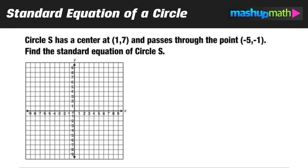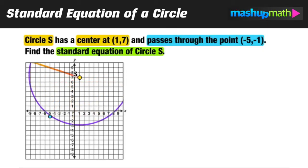So here we have circle S with a center at (1,7), it passes through the point (-5,-1) and we want to find its standard form equation. We can start by plotting the center at (1,7) and the point on the circle at (-5,-1). This should help us visualize what this circle looks like and understand that the distance between the two given points represents the radius of the circle.